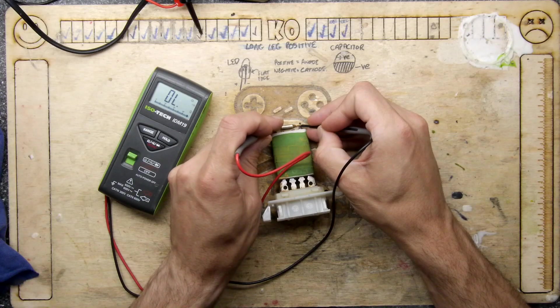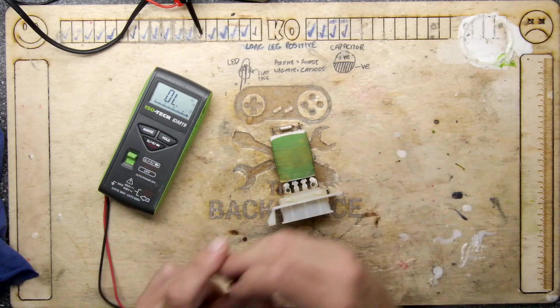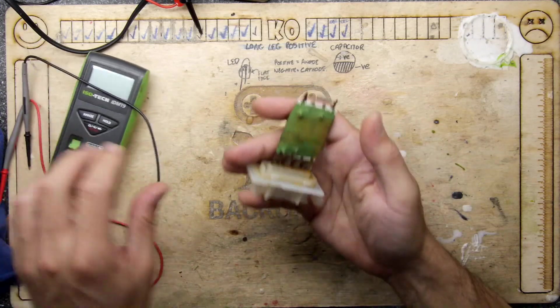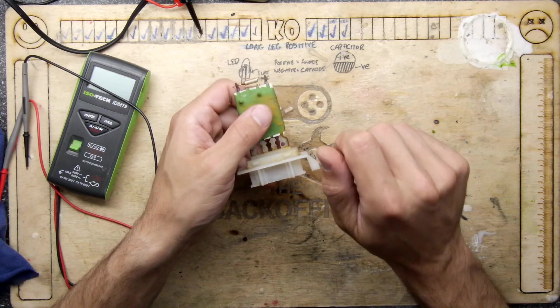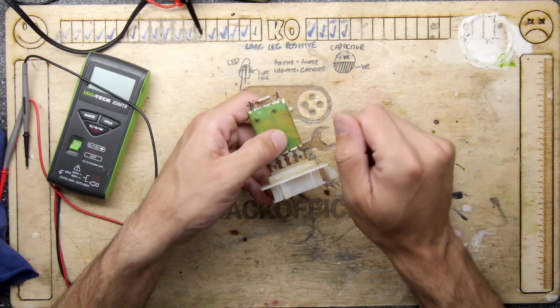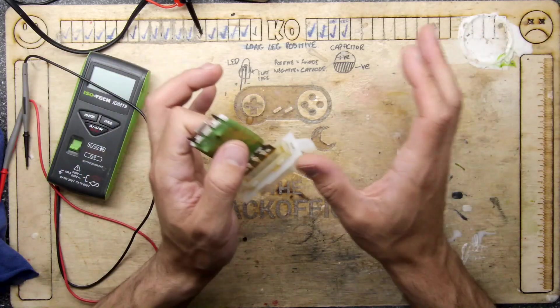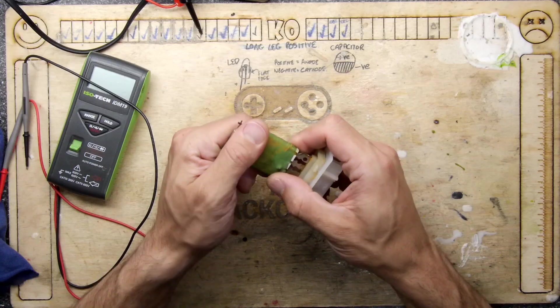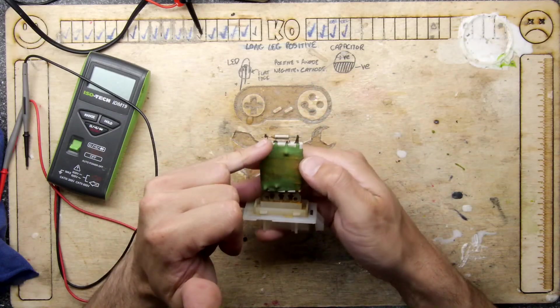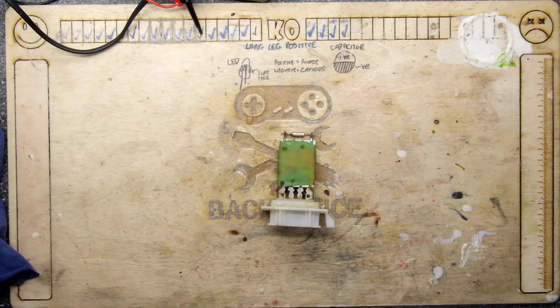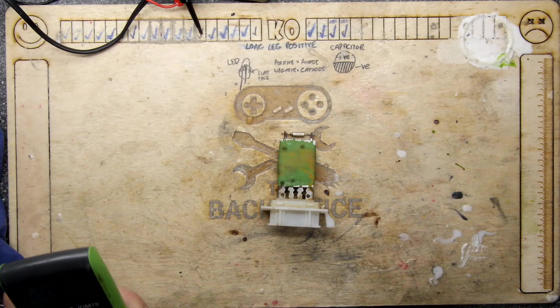What you should be getting is continuity through that, and it's not, so that has actually blown. That's what's bizarre about this. What this was doing in the car was when you had it on two and three it didn't do anything, and then when you had it on four it made everything go dim and the fans came on. The fact that everything went dim showed this was drawing too much current.